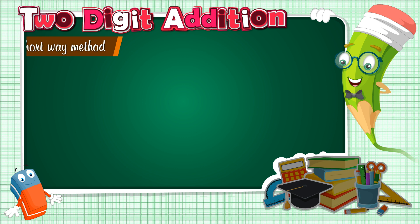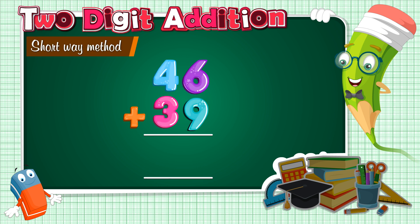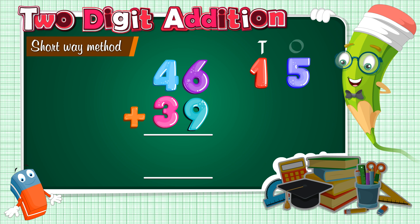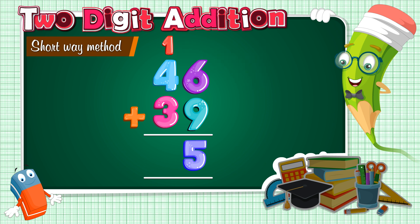Let's learn addition with carry the short way. We are using the same example as earlier. We already know that 6 plus 9 gives us 15, and we can't place it under the 1's column nor under the 10's column. So we will split it into 10's and 1's. After splitting, we get 1 ten and 5 ones. Write 5 under the 1's column and carry 1 over the 10's column. Now there are 4, 3, and the 1 that we carried over in the 10's column. Let's add them: 1 plus 4 plus 3 is equal to 8. So 85 is the answer to this problem.